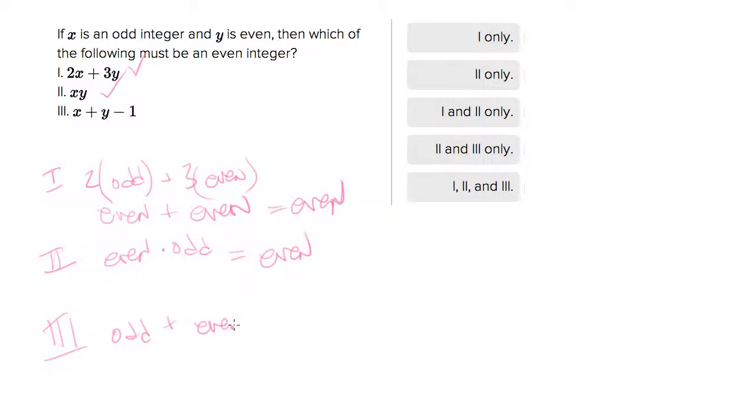y is even, minus one. An odd plus an even will always be odd, so this is sort of saying an odd minus one. An odd minus one will always be even, or you can think of that as odd minus odd. Odd minus odd will always be even, so all of these are always even. The answer is I, II, and III.